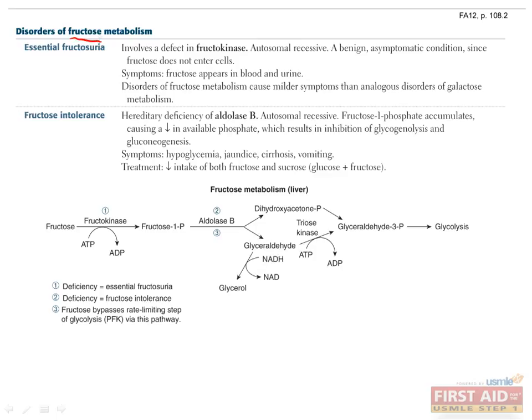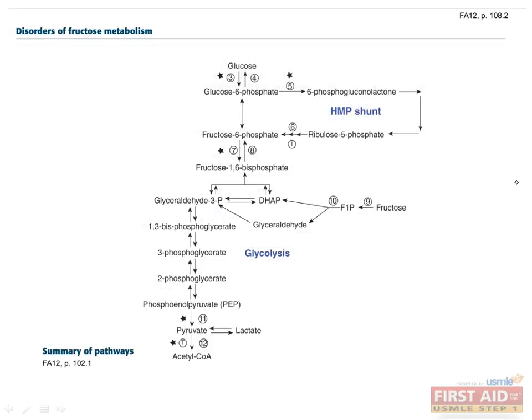Fructose metabolism is important because it converts dietary monosaccharide fructose into a substrate for glycolysis and energy production. As you can see in our zoomed-out metabolism diagram, fructose enters glycolysis partway through the pathway.